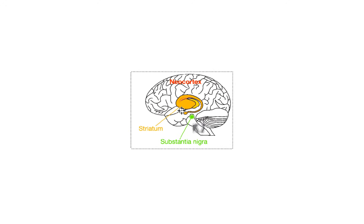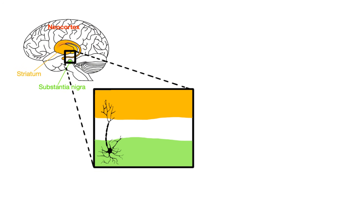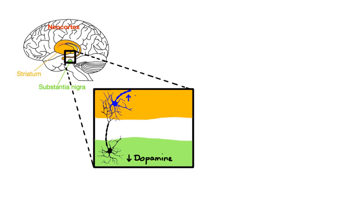Parkinson's disease develops when the neurons connecting the substantia nigra to the striatum progressively degenerate. Since dopaminergic neurons that originate in the substantia nigra normally exert inhibitory effects on GABA neurons located in the striatum, too little dopamine results in more GABA, causing increased inhibition of the thalamus as well as reduced excitatory input to the motor cortex.